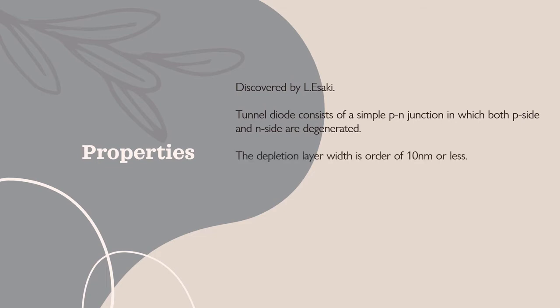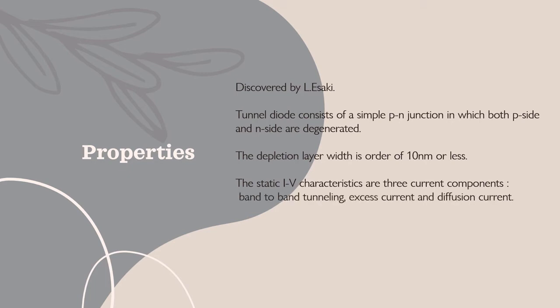The third property is that the depletion layer width of the P-N junction diode becomes very small — near about 10 nanometers or less than 10 nanometers. The fourth property is that when we draw the static characteristics, we see three components of current: the first is band-to-band tunneling, the second is excess current, and the third is diffusion current.